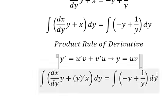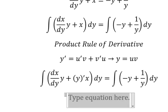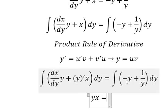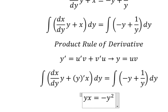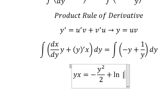The integration of y equals uv. So the integration of negative y, we have negative y squared over 2. The integration of 1 over y, we have ln of the absolute value of y.